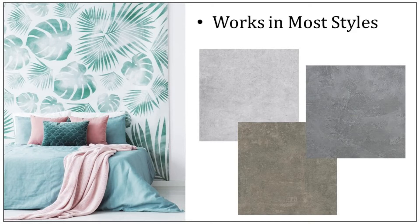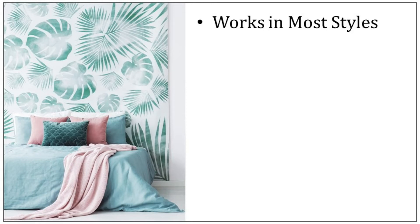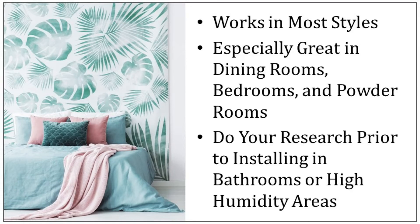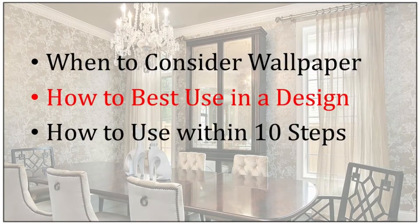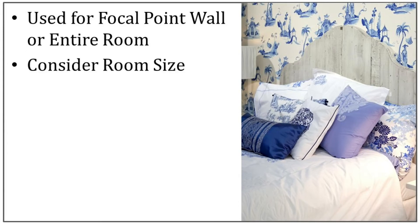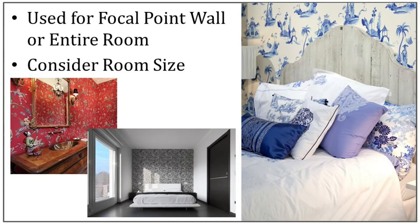Let's talk about which rooms to use wallpaper in. I especially love using wallpaper in dining rooms, bedrooms, and powder rooms, but it can also look great in nearly any other room of the home. You have to be careful with high humidity areas and bathrooms with tubs or showers — it's definitely possible, but you need the right paper, the right installer, and proper prep work done. Wallpaper is commonly used in two ways: on a focal point wall, or throughout the entire room. For smaller rooms like a powder room, hanging it on all walls is pretty common. For a larger room, you might see it on one wall, just on the ceiling, or on all four walls above a chair rail.